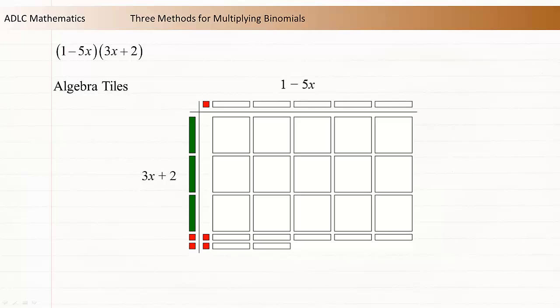This is now the final representation. Count the number of each tile type to determine the product. 1 minus 5x times 3x plus 2 is equal to negative 15x squared minus 7x plus 2.